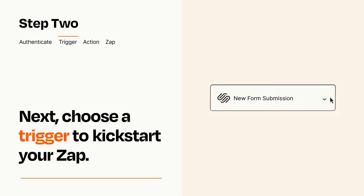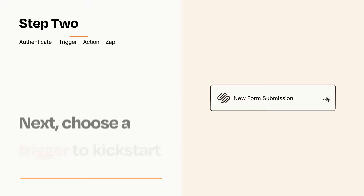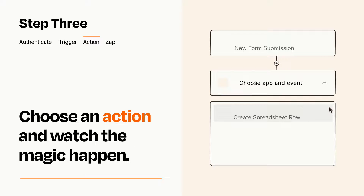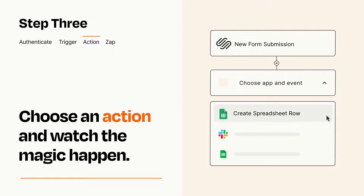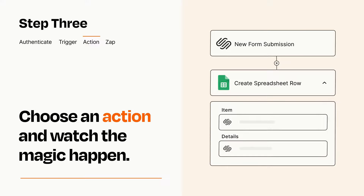This last part is where the magic happens. Choose the action you want to happen in your target app. You'll see a bunch of fields where you can specify the details of your Zap. You can type free form text or pull data in from your trigger step as needed.